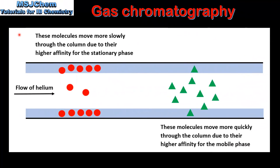The components of the vaporized sample pass through the column at different rates, depending on their affinities for the stationary phase or for the mobile phase. The molecules on the left move more slowly through the column due to their higher affinity for the stationary phase, while the molecules on the right move more quickly through the column due to their higher affinity for the mobile phase.